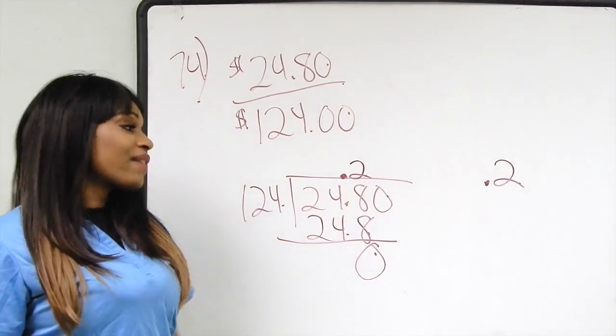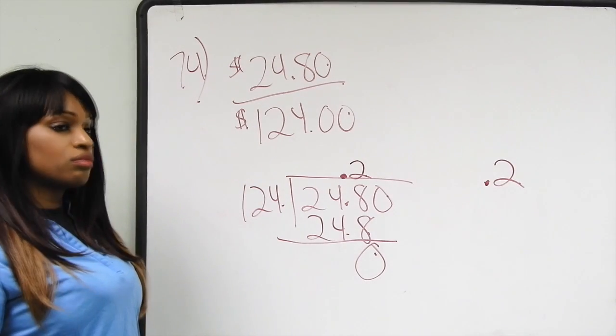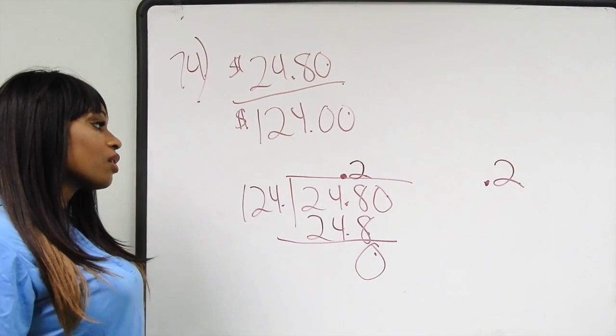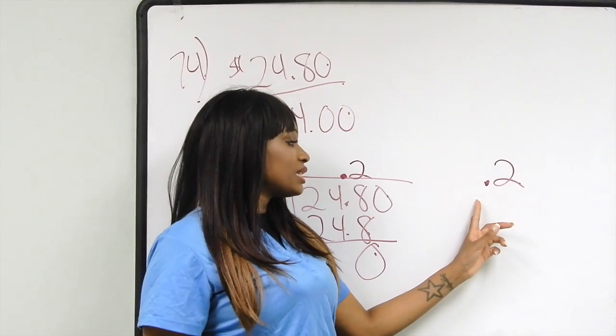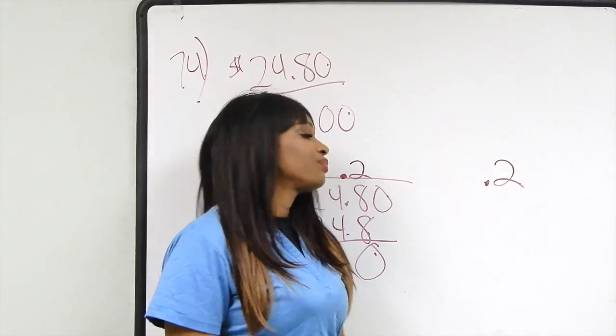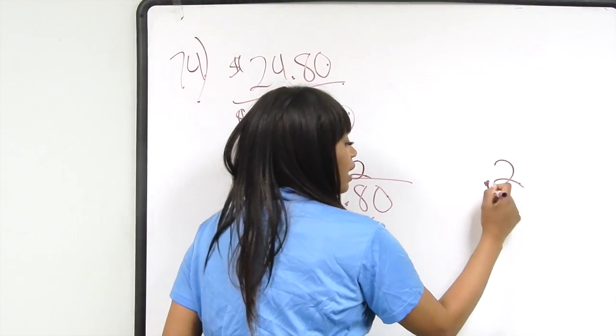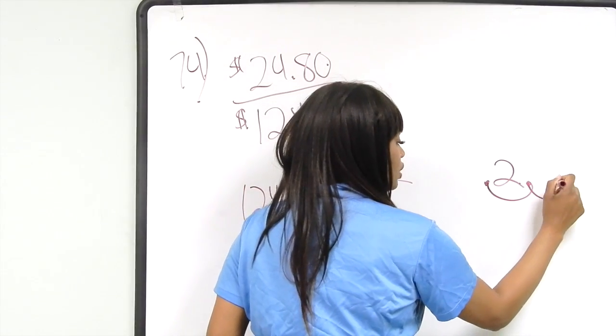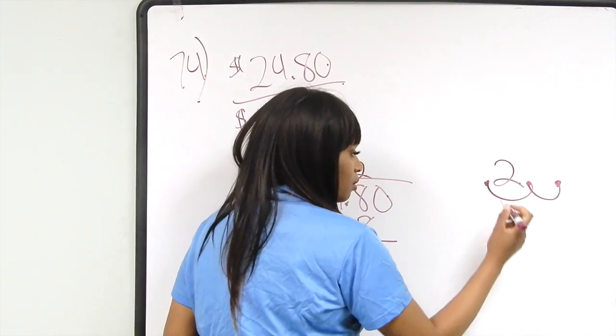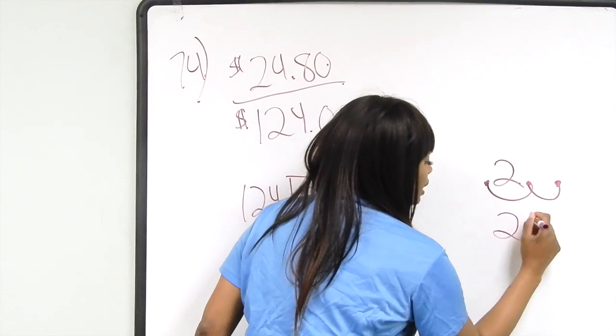In order to make it a percentage, we have to multiply times 100, or we can simply move two places to the right. If you move 0.2 two places to the right, 0.2 will become 20%.